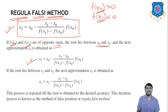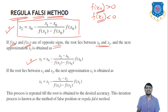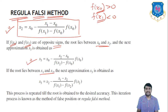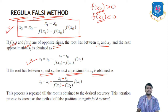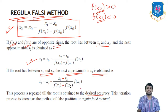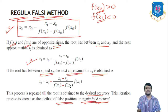So the next approximation x3 is: x3 = x0 − [(x2 − x0) / (f(x2) − f(x0))] · f(x0), because the root lies between x0 and x2. If the root lies between x1 and x2, then x3 = x2 − [(x1 − x2) / (f(x1) − f(x2))] · f(x2). This process is repeated until the root is obtained to the desired accuracy. This iteration process is known as the method of False Position, or Regula Falsi method — both names are the same.